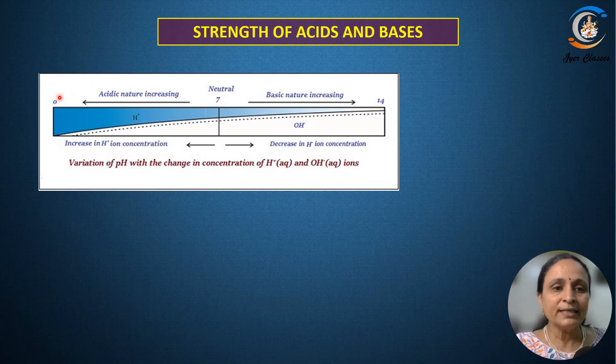If it is 0, it is highly acidic. If you take the middle point, that is neutral which is 7, and basic it is 14. If you take from the middle point and go towards 0, the H plus ion concentration goes on increasing. And if you go to the other side, the H plus ion concentration goes on decreasing. OH minus ion concentration goes on increasing.